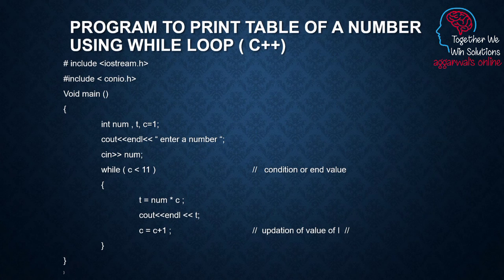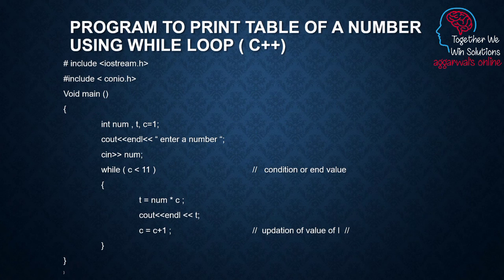Next is the program to print the table of a number using the while loop. In this example we need to print a table of any given number, using the while loop. This program requires three variables: a variable num to take the number from the user, a variable to store the product (num × counter), and a counter variable — because when we talk about a table we need multiples up to 10. All three variables are of data type integer. We take the number from the user and store it in variable num. c is given initial value 1. The condition is: loop as long as c's value remains less than 11, meaning we loop till c reaches 10; the moment it becomes 11 the loop terminates.